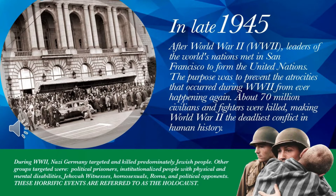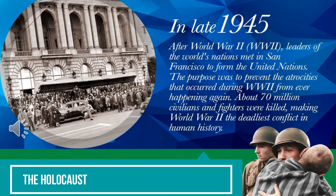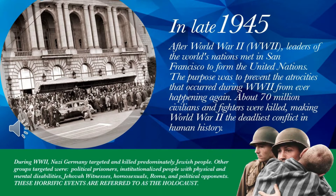During World War Two, Nazi Germany attacked and killed predominantly Jewish people, but also other groups like political prisoners, institutionalized people with physical and mental disabilities, Jehovah's Witnesses, homosexuals, Roma, and political opponents.